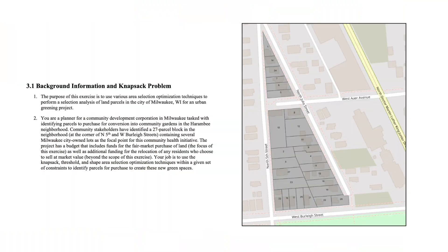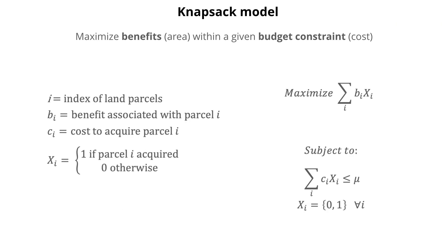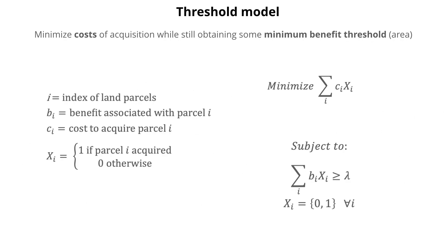While these selections can and often are made on an ad hoc basis, in this course we'll explore ways to make these selections systematically. There are three primary approaches to optimization parcel selection. One, maximizing total benefit, which is often land area, within some maximum budget, which is known as the knapsack model. Two, minimizing total cost while still meeting some minimum benefit threshold, which is known as the threshold model.